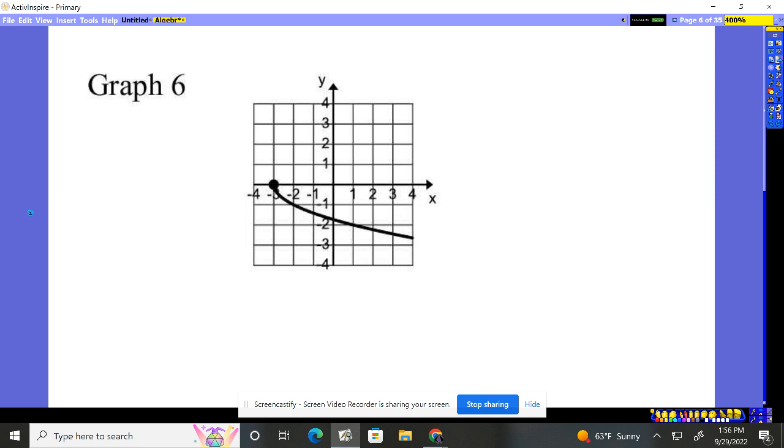Here, notice when X is negative four, there's no value that goes with it. This guy starts at this end point and keeps going. So this is discontinuous. What's the name of it? End point discontinuity.